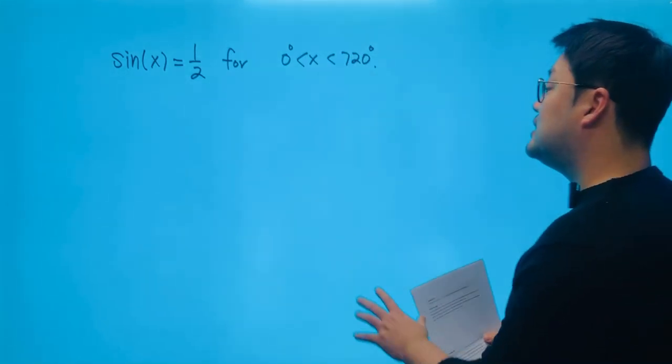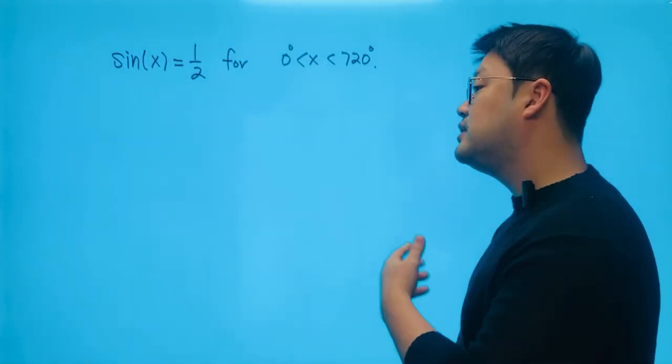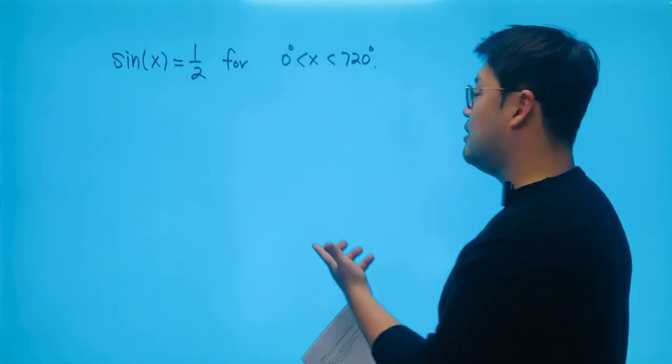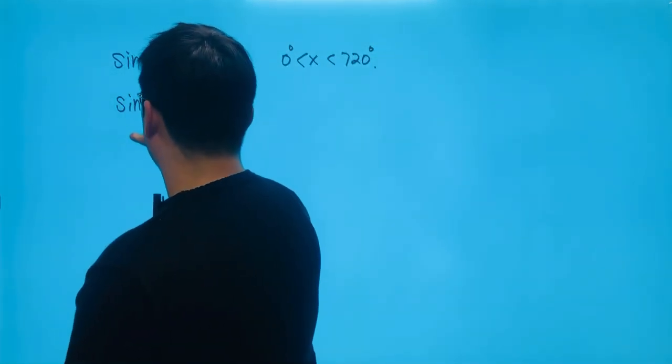Okay, so we have all this information, and I just need to solve for sine x equaling one-half. Now, first off, the very first idea that we can get, the obvious answer is just going to be sine x equaling sine 30.